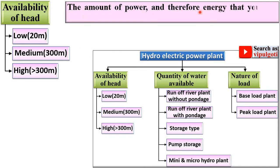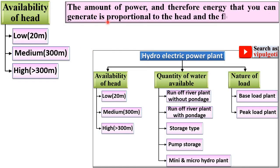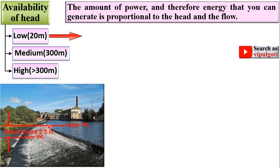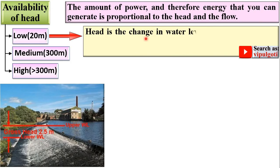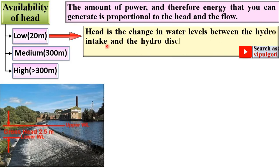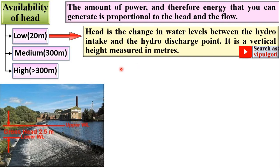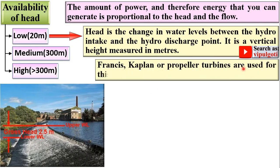The amount of power and energy you can generate is proportional to the head and the flow, or discharge. For the low head power plant, the head is up to 20 meters. The head is the change in water levels between the hydro intake and the hydro discharge point — a vertical height measured in meters. Francis, Kaplan, or propeller turbines are used for this type of plant.